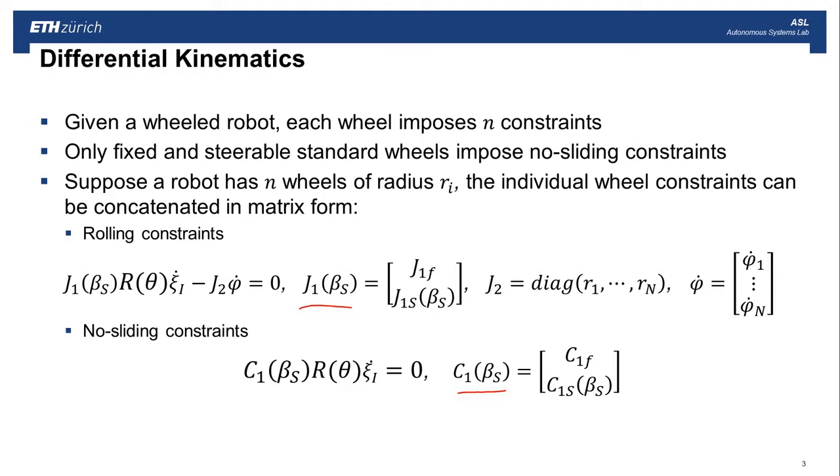So here we just take all those J matrices and stack them up into this J1. We take all those C matrices and stack them up into C1. And we come up with the stacked rolling constraint, and the stacked no sliding constraint. And we've separated these components into two types. First, we have the types for non-steerable wheels, those are these F matrices. And then we have the components for steerable wheels, those are these S matrices that are functions of beta. And finally, we've just stacked up all the wheel radii and the wheel speeds into J2, the square diagonal matrix, and phi dot, this stacked column of wheel speeds.